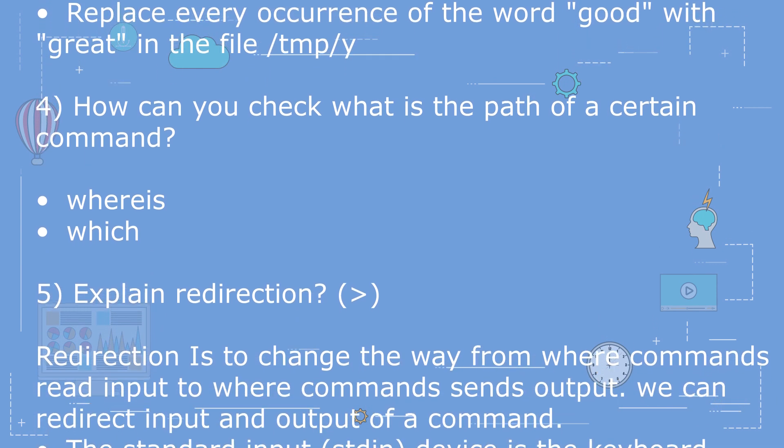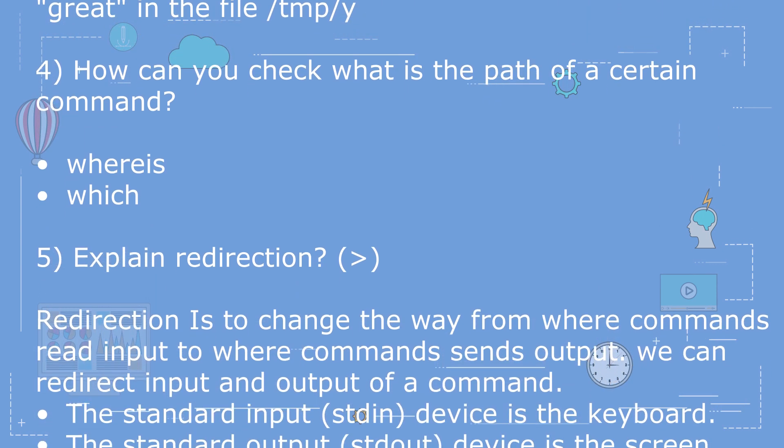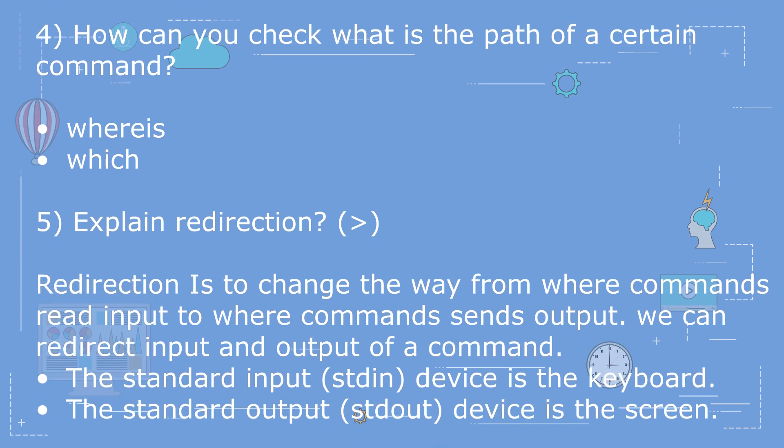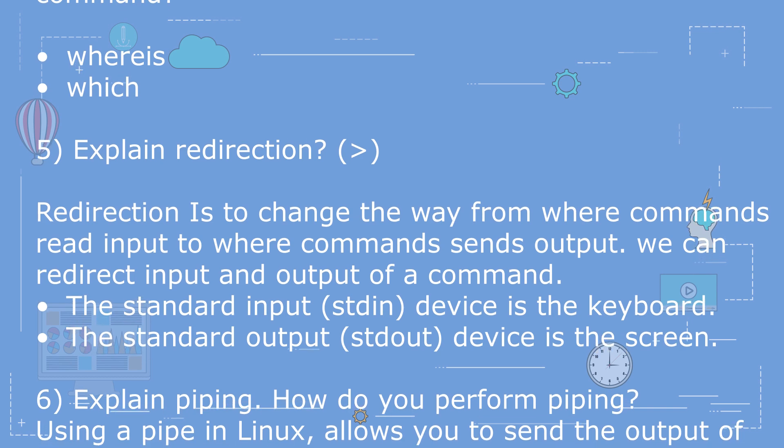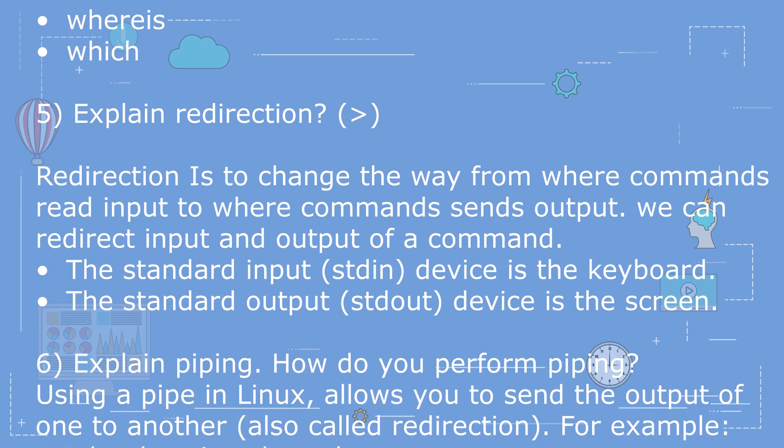Question 5: Explain redirection. Answer for this question is: Redirection is to change the way from where commands read input to where commands send output. We can redirect input and output of a command.